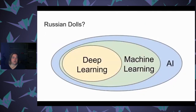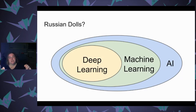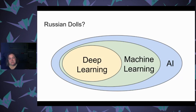A lot of you've heard about artificial intelligence, machine learning, and deep learning. They're kind of like a bunch of Russian dolls. Essentially, AI contains all of them. Machine learning is a subset of AI, and deep learning is a subset of machine learning.